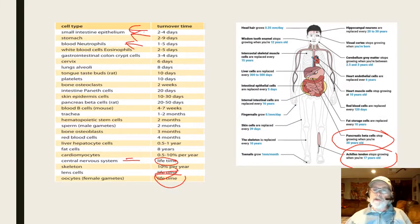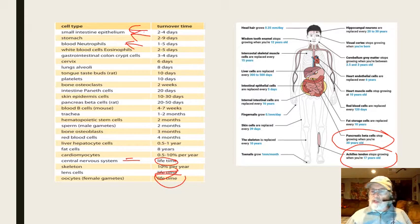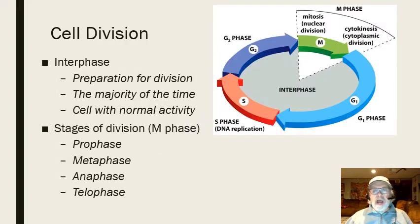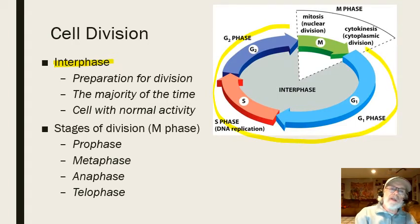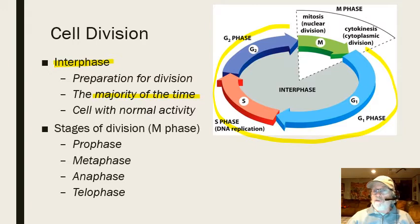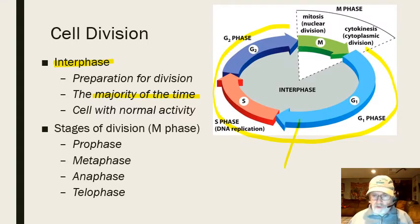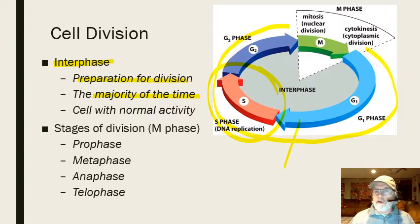Other cells like the lining of the mouth and gut are constantly replaced. If you bite your cheek, in about three or four days that wound is gone because those cells turn over rapidly. Now let's get into the nitty-gritty of what cell division really is. Cell division is divided into two large portions. The first is called interphase — the biggest portion. Most cells in your body are in interphase at any given time.